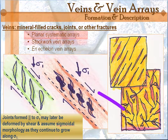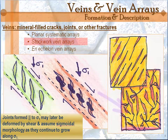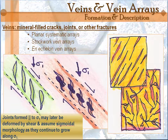Then you have stockwork vein arrays. It's messy — it's all over the place. These are formed when the rock has been shattered, either by the existence of really high fluid pressure or as the result of pervasive fracturing. This is often associated with folding and faulting in the region.